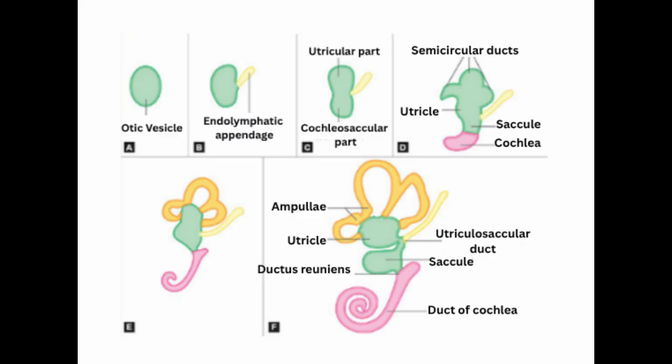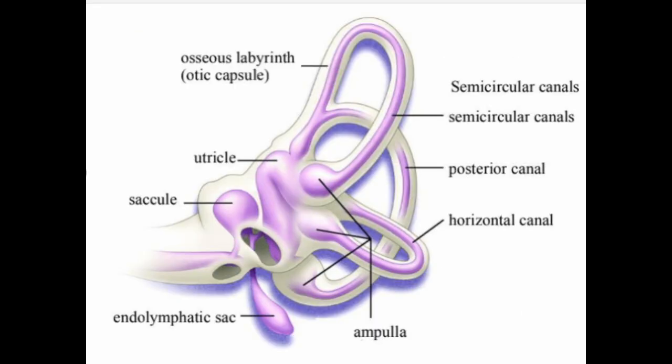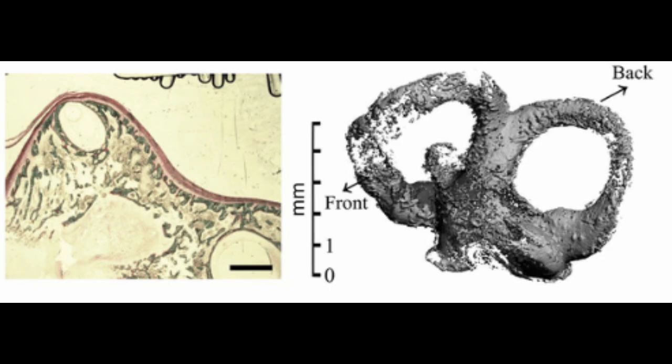From the dorsal utricular portion, the utricle and semicircular canals are formed — the main organs of balance. The otic vesicle differentiates to form all components of the membranous labyrinth and internal ear structures for hearing and balance. The mesoderm surrounding the otic vesicle forms the cartilaginous otic capsule, which gets ossified by around the 23rd week of embryonic life to form the bony labyrinth.